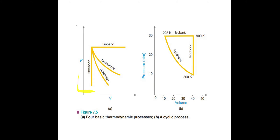In the pressure-volume graph, the line where pressure is constant describes the isobaric process. In the isothermal process, temperature remains fixed, but there can be a change in pressure and volume, giving a curved line. In the adiabatic process, heat cannot flow into or out of the system, but there can be a change in pressure and volume, shown by its own distinct curve.